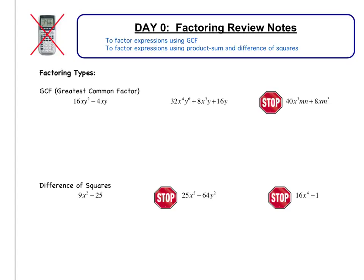We are going to start with GCF, or greatest common factor. So looking at the first example, 16xy squared minus 4xy. Looking first at the numbers, what's the greatest common factor of 16 and 4? Well, I can divide both by 4, so I bring a 4 out.